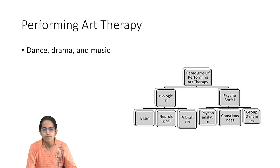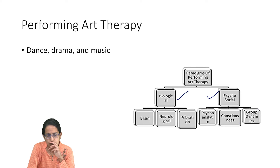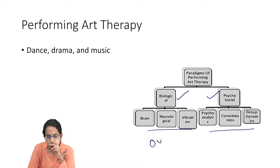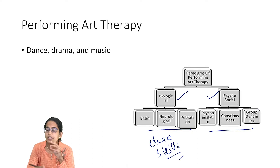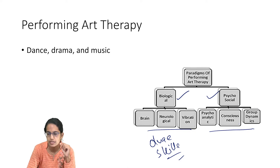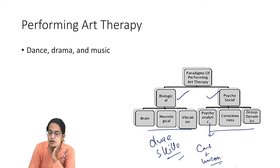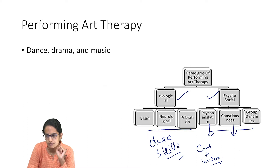Under performing arts therapy, there can be biological or psychosocial elements. Under biological, we have brain, neurological, or vibrational aspects. Under psychosocial, it covers psychoanalytical consciousness and group dynamics. Professor Olive Skille said that there has been an effect of low frequency on cellular systems of the body, and this has been a reason for the use of performing arts. Under the psychodynamic psychoanalytical paradigm, it talks about consciousness and unconsciousness being built together, found in effectively dealing with suppressed desires and conflicts.